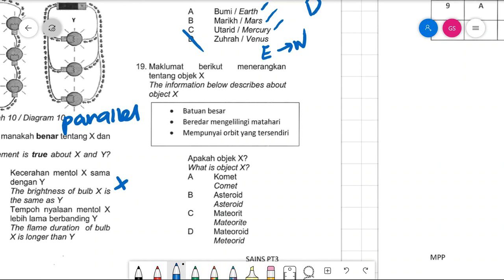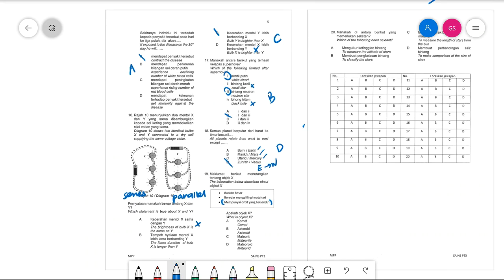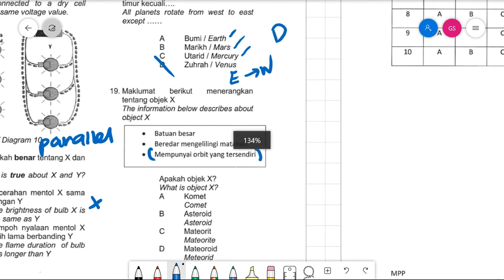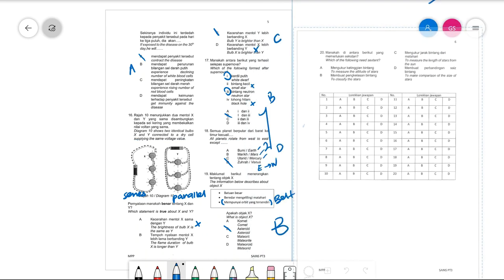Number nineteen asks which object has its own orbit around the sun. Comets are not the answer. The object shown is a large rock moving around the sun with its own belt — this is an asteroid. The answer is B — asteroid belt.